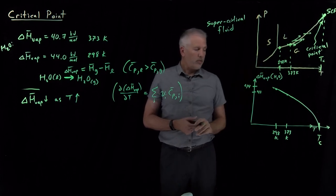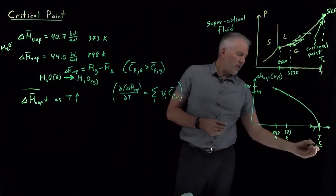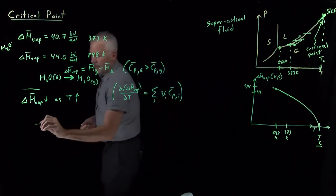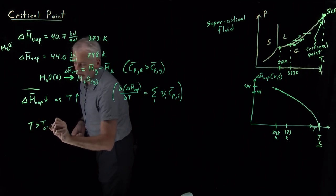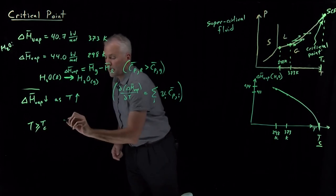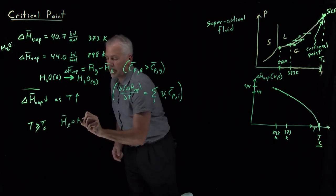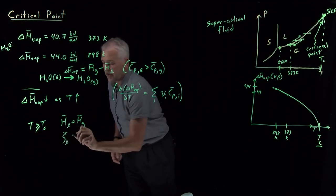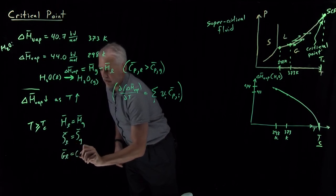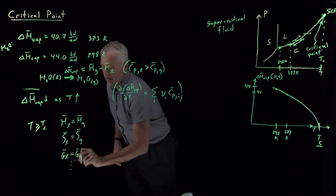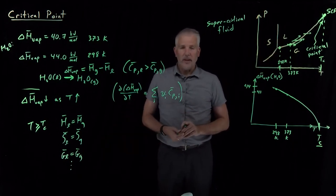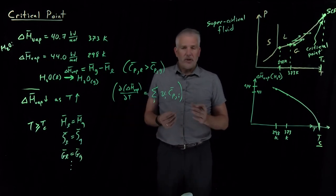Tc is the temperature above which there is no enthalpy difference between liquid and gas. At or above the critical temperature, not only is the molar enthalpy of the liquid equal to that of the gas, but the entropy and free energy of the liquid and gas also become equal. All thermodynamic properties of the liquid and gas converge as you approach the critical point, and above it we just call the substance a supercritical fluid.